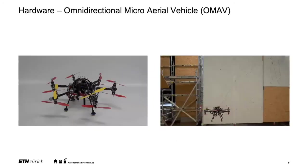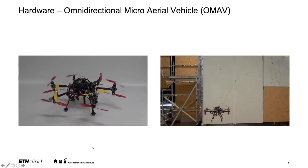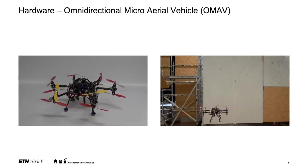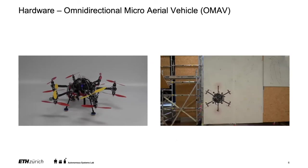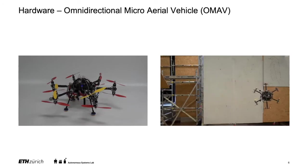Our platform is a hexacopter-shaped design where we can move all propeller arms and all axes of the propellers individually. This allows us to hover like a standard hexarotor but also take any required pitch or roll angle in space — we can fly in any given orientation we're interested in.